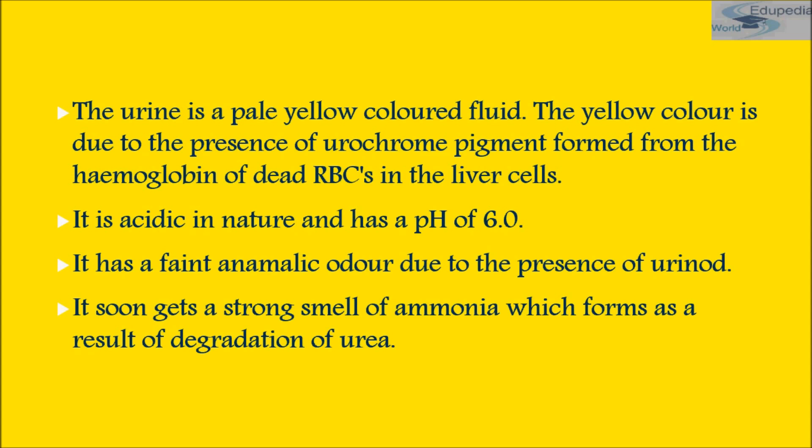Urine is acidic in nature with a pH ranging from 4.8 to 7.5. Except after meals, due to alkaline tide, it becomes alkaline in nature. Note that though glomerular filtrate is alkaline, urine is acidic in nature. It has a faint aromatic odor due to the presence of urinoid compounds. It soon gets a strong smell of ammonia, which forms as a result of degradation of urea.